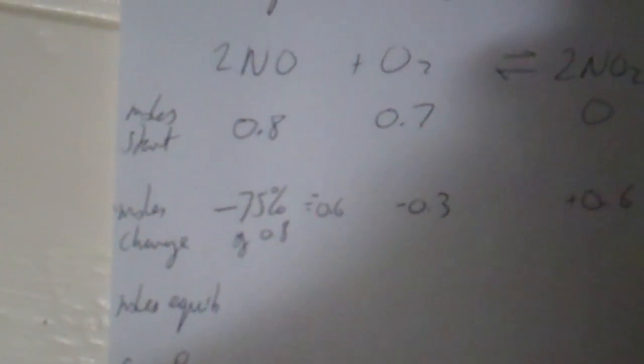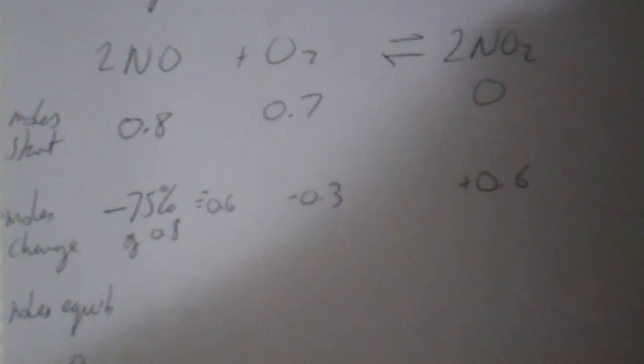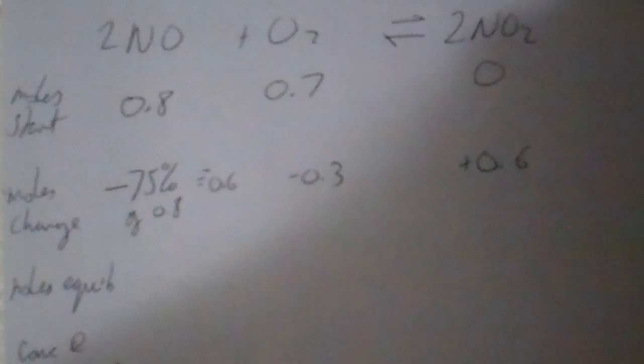And if that's going down by 0.6, look at the ratio, it's 2 to 1, so that'll be going down by 0.3. And the NO2 is in the same ratio as the NO, so going up by 0.6.